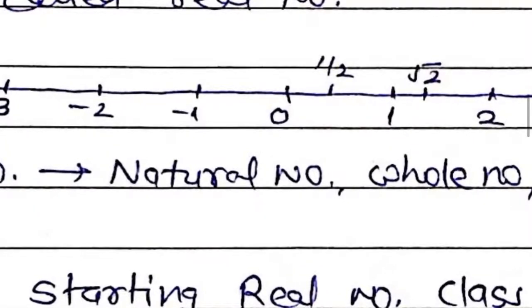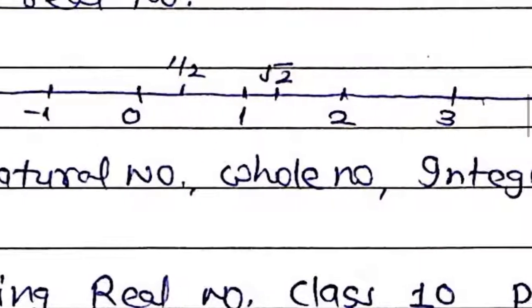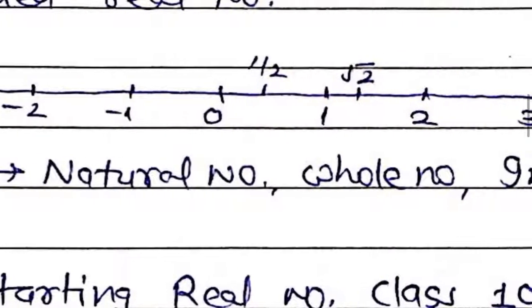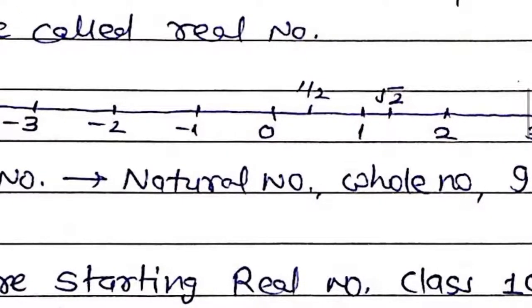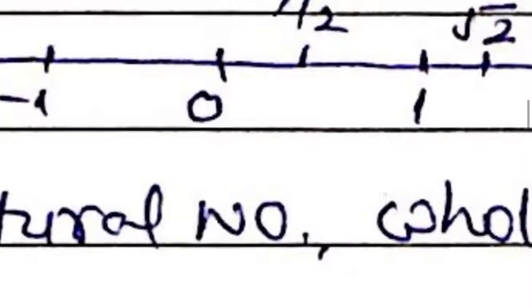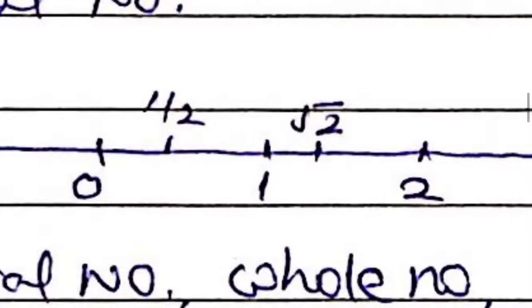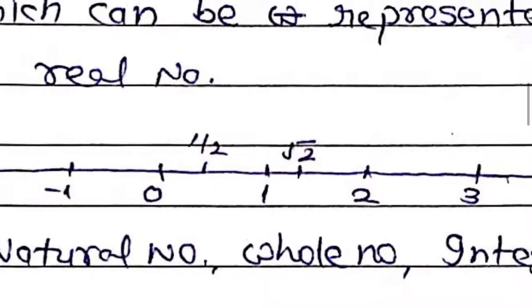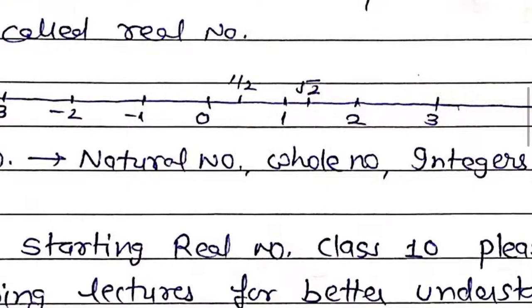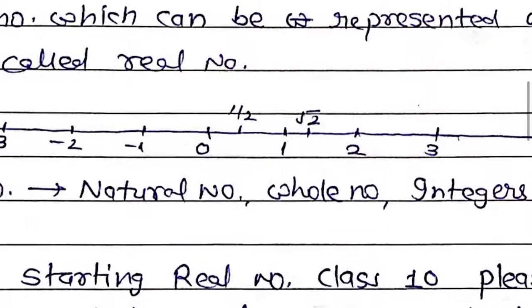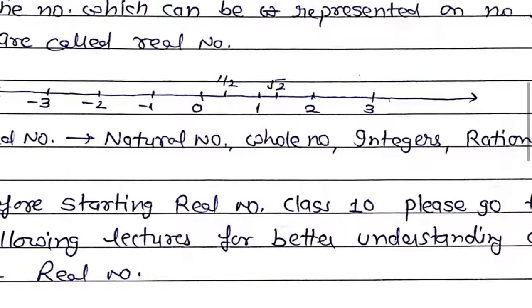Agar isko enlarge karke dekhein, to humare paas number line pe 1, 2, 3, 4 up to infinity — matlab natural numbers aa rahe hain. 0, 1, 2, 3 — matlab whole numbers ka group bhi aa gaya, integers bhi nazar aa rahe hain. Agar hum 1/2 ko dekhein, to 1/2 can also be represented on number line — rational numbers bhi aa rahe hain. Aur root 2 ko bhi — irrational numbers can also be represented on number line.